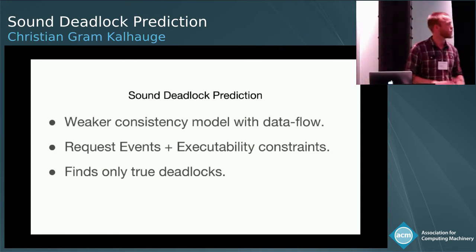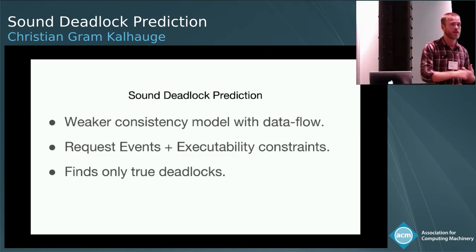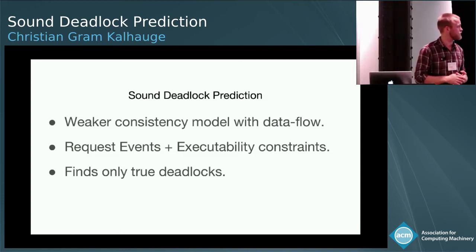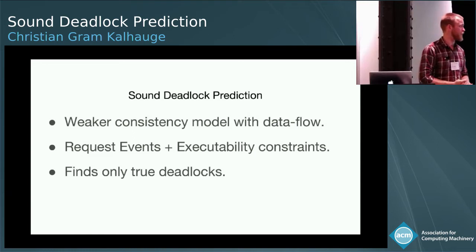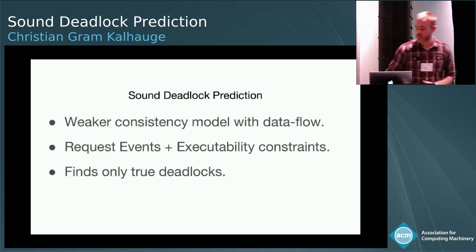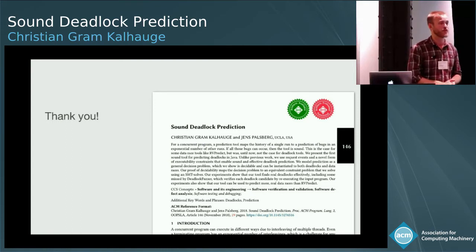Let me go over the points one more time. We built a sound deadlock predictor. The weakened consistency model allowed us to find more data races and deadlocks than current work. We added request events and executability constraints, which enabled us to find deadlocks at all. And finally, we are only finding true deadlocks. Thank you very much — please read the paper or ask questions now or later, I'm very happy to answer them.